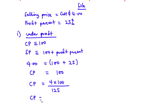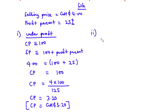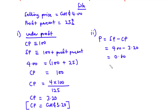The cost price is 3.20 Ghana cedis. Now let's find the profit: Profit = Selling price − Cost price = 4 − 3.20 = 0.80 Ghana cedis, or 80 Ghana pesewas.